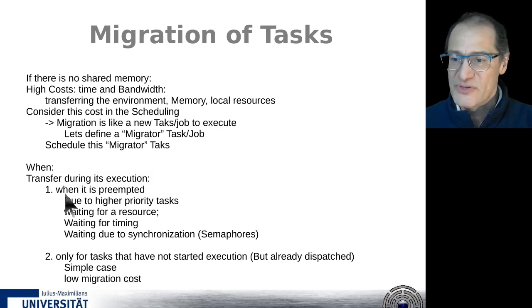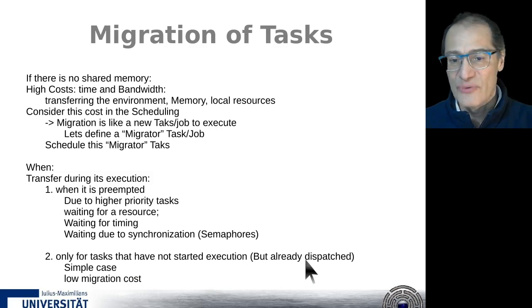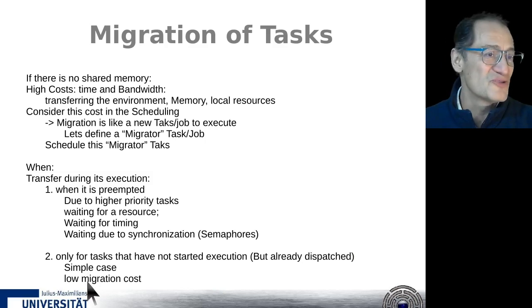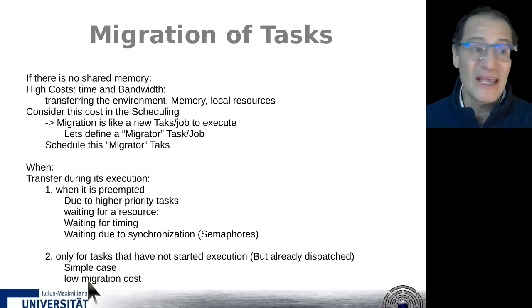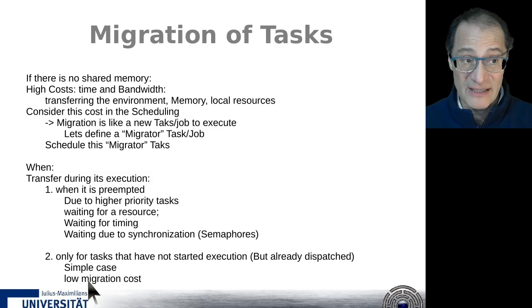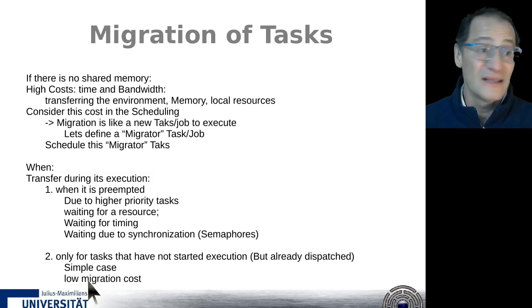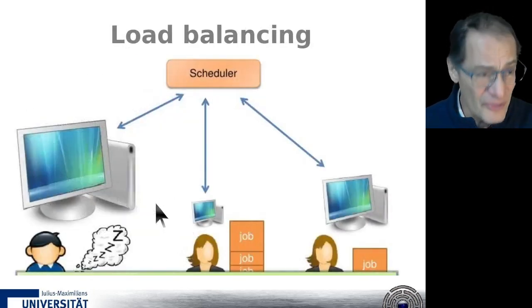As mentioned, we have two options: with preemption, and the simpler case of moving only tasks which have not yet been dispatched. In those cases the cost is lower and migration is much simpler. Another problem is transferring the execution code from one computer to another. The best solution is if every computer already has a copy of the execution code but it is not activated - any computer can activate any application because it already has all applications in memory, just not activated. This makes everything simpler but consumes a lot of memory.